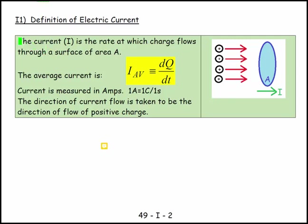What we say is the current I. C has been used for both coulombs and capacitance, so we need a new letter so we're calling it I. The current I is the rate at which charge flows through the surface area. So it doesn't matter what the area is, it's just a measure of how many coulombs per second pass the area. I is defined as being the amount of charge flowing per second.